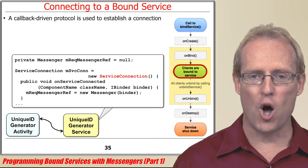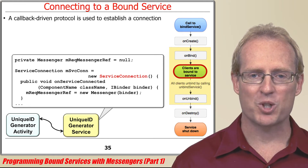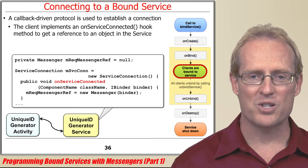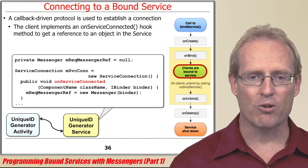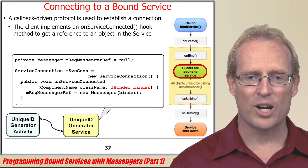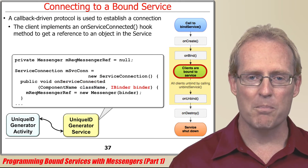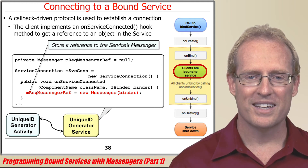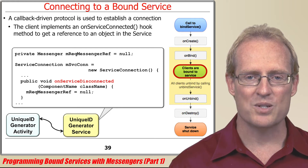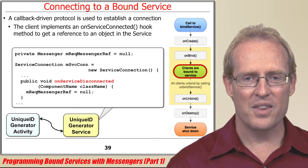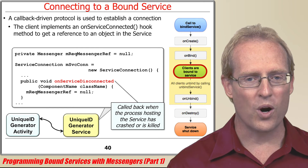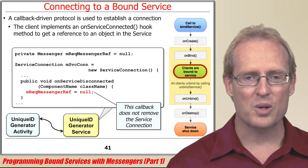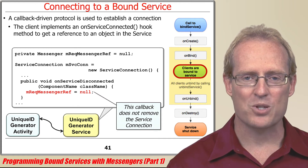The service connection class implements a callback-driven protocol that the Android service framework uses to establish a connection between a client and a bound service. After a connection is established, the framework automatically dispatches the onServiceConnected hook method to give the client the iBinder object of the communication channel connected to the service. The unique ID generator activity overrides this method to get the iBinder to the messenger returned from the onBind factory method, which is then encapsulated in a new messenger reference data member for later use. The Android service framework automatically dispatches onServiceDisconnected when a connection is lost — for example, if the process hosting the service crashes or is killed. This hook method does not remove the service connection itself, which remains active, so the client will receive a callback to onServiceConnected when the bound service is up and running again.